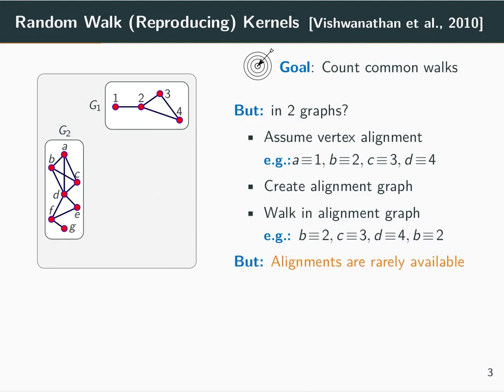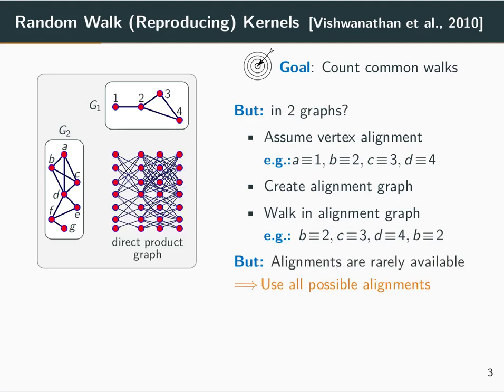But how can we treat the fact that these alignments are rarely available? In the case of vanilla random walks, the solution comes by taking into consideration all possible such alignments.